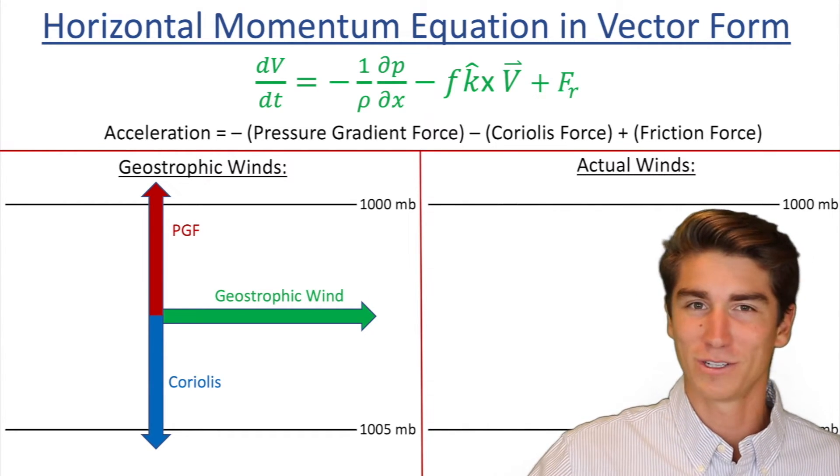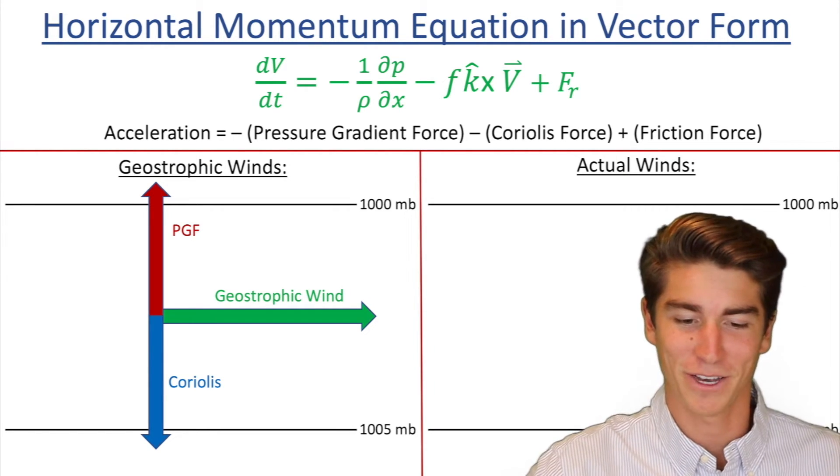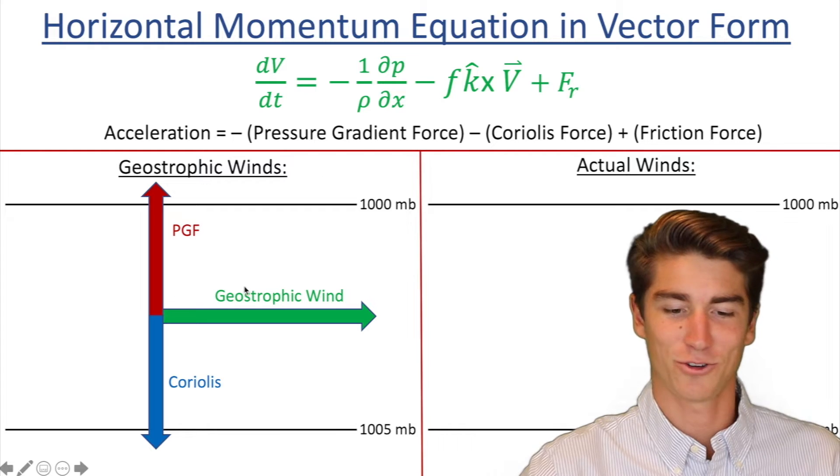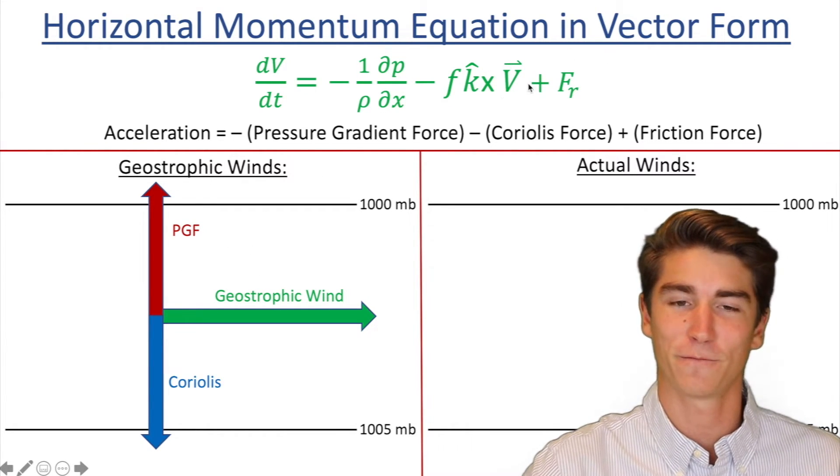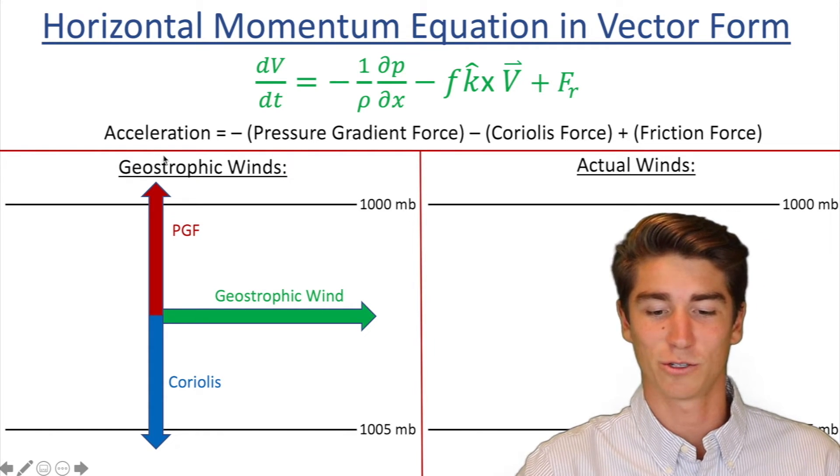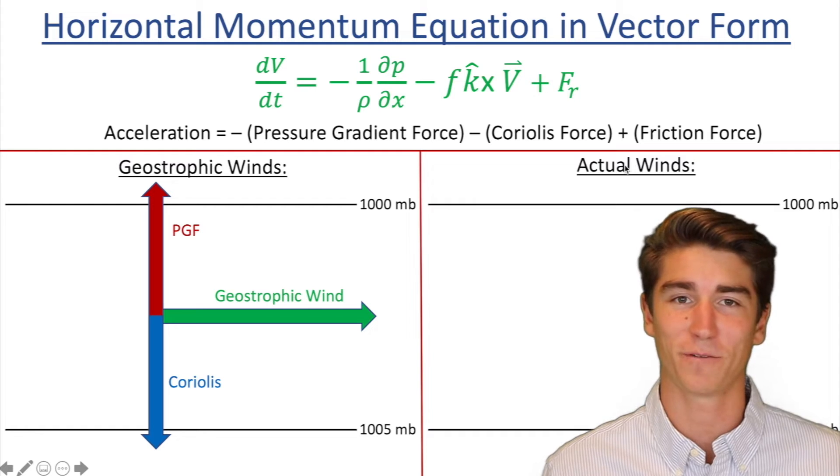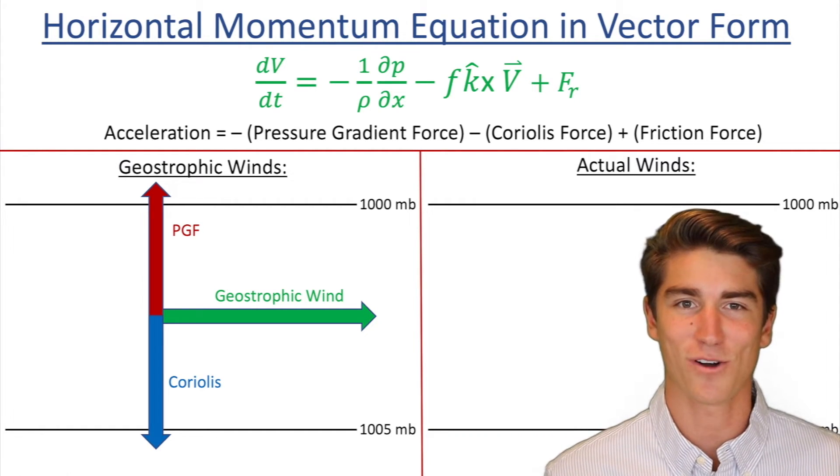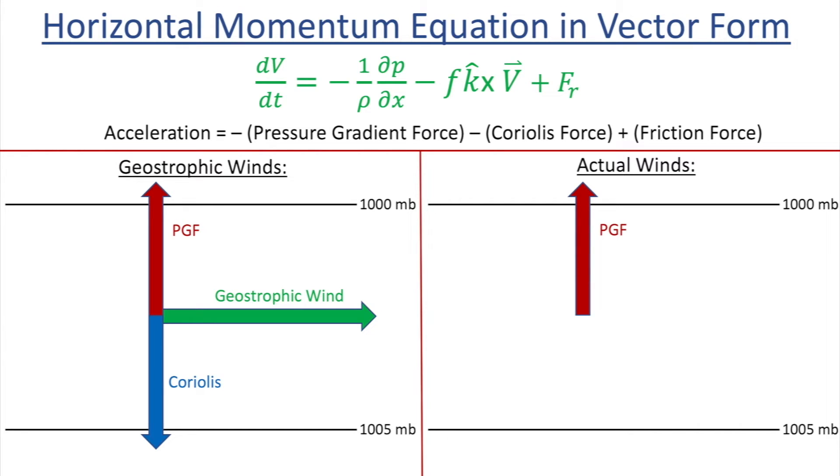But now, if you were intuitive, or not intuitive, but really focused on this video, you'd notice in this drawing, I only had the pressure gradient force and Coriolis and I left out friction. And that's why it's geostrophic versus actual. For actual winds, you have to include that friction because even though it's really small, it will still make a difference. And we'll see what that difference is in a minute.